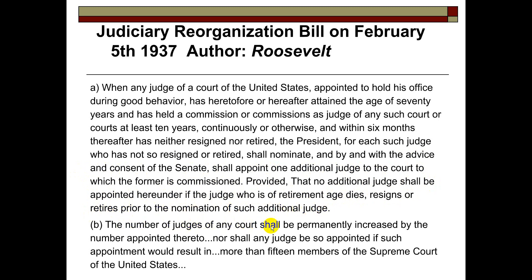No additional judge shall be appointed if the judge who is of retirement age dies, resigns, or retires prior to the nomination of such an additional judge. The number of judges of any court shall be permanently increased by the number appointed, nor shall any judge be appointed if such appointment would result in more than 15 members of the Supreme Court of the United States. What is the main point of this document? Pause the video and consider it.